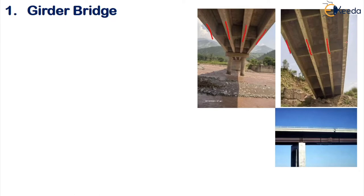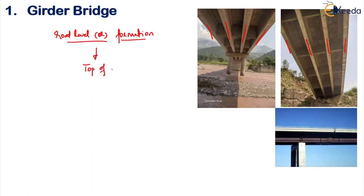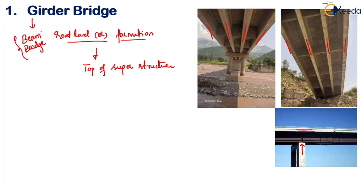In this girder bridge, the road level or formation level — on which your vehicle will pass — will normally be on top of the superstructure. So this is your formation level, on top of the superstructure. That type of bridge is called a girder bridge. In a girder bridge you can see a lot of beams and supporting lateral girders. The other name for girder bridge is also your beam bridge.